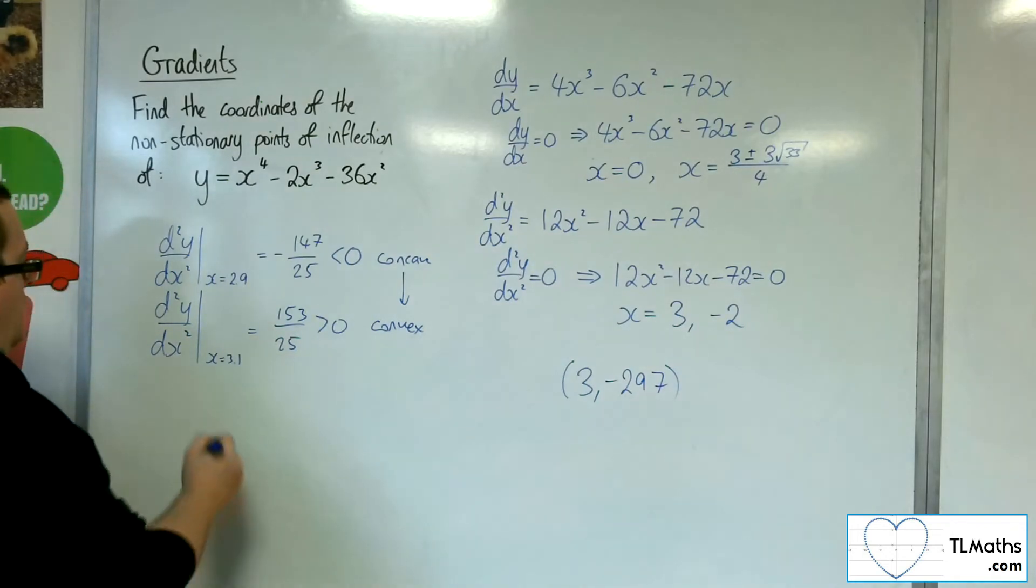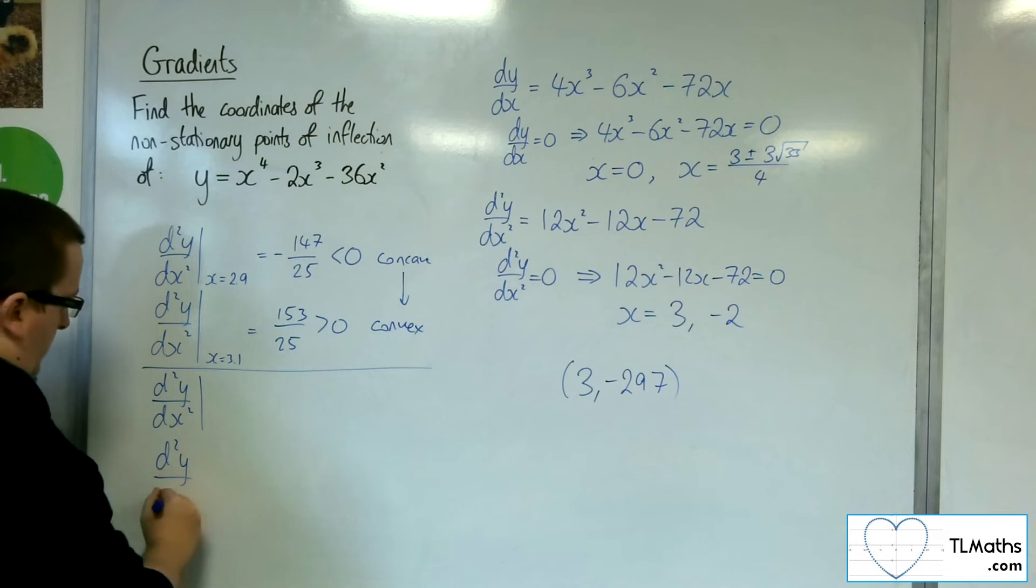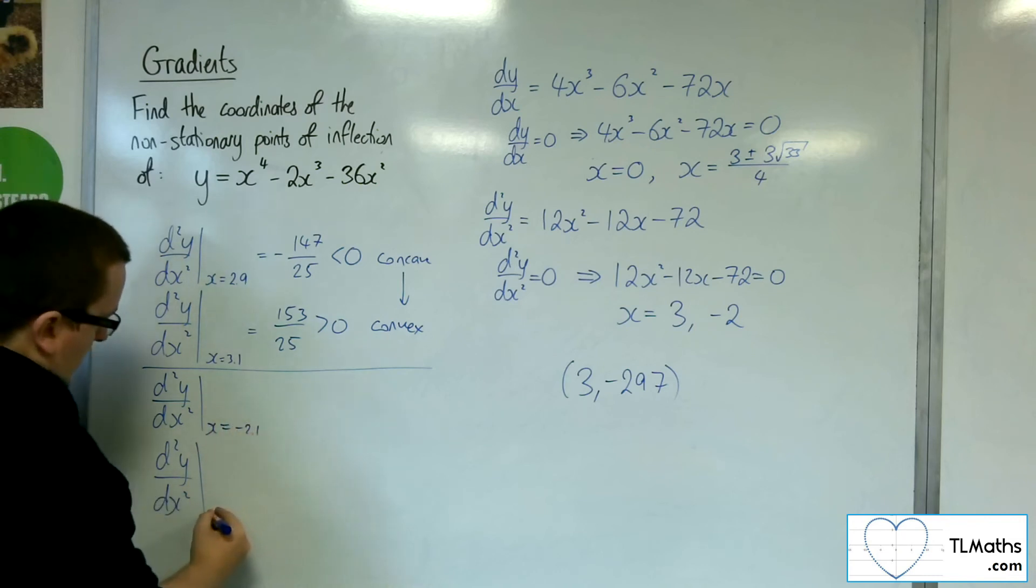So that's one of them. Now we want to check the minus 2. So d2y by dx squared and d2y by dx squared. Right, so for minus 2, we'd have to look at minus 2.1 and let's say minus 1.9.